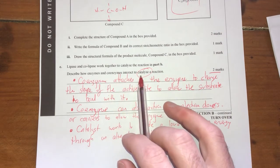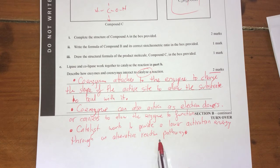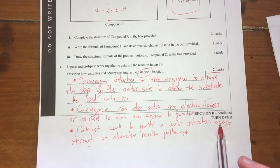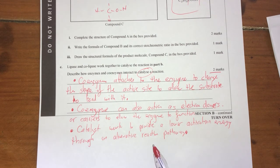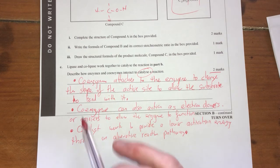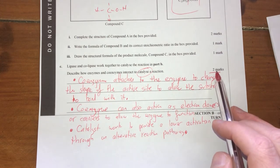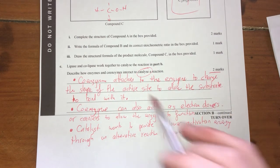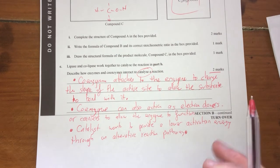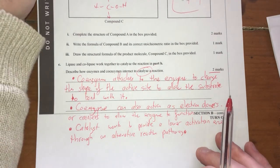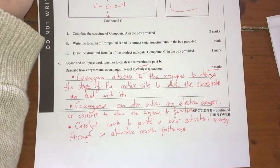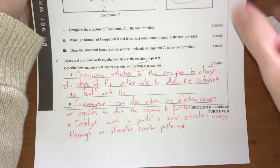Coenzymes I'll talk about changing shape and the fact that they also can do electron donors. Any time I see catalyst I'm going to talk about this idea of an alternative reaction pathway with a lower activation energy. Just to try and hit all the marks that I could possibly get with that. I've got three dot points for two marks. But hopefully within that there should be at least two marks worth of stuff. So that's question seven. Done and dusted. Question eight coming up next.